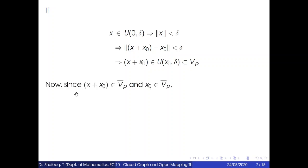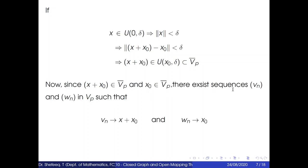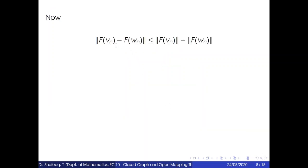Since x + x₀ belongs to V̄p and x₀ belongs to V̄p, there exist sequences vn and wn in Vp such that vn converges to x + x₀ and wn converges to x + x₀ − x₀ = x. That means vn − wn converges to x. Now the norm of f(vn) − f(wn) is less than or equal to the norm of f(vn) plus the norm of f(wn), which is less than or equal to p + p = 2p, since vn and wn belong to Vp.